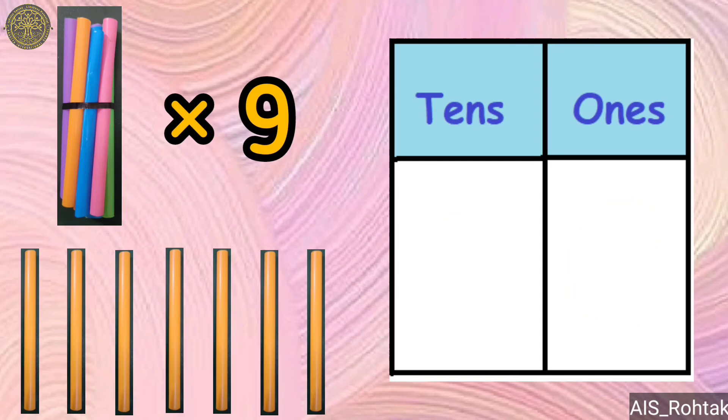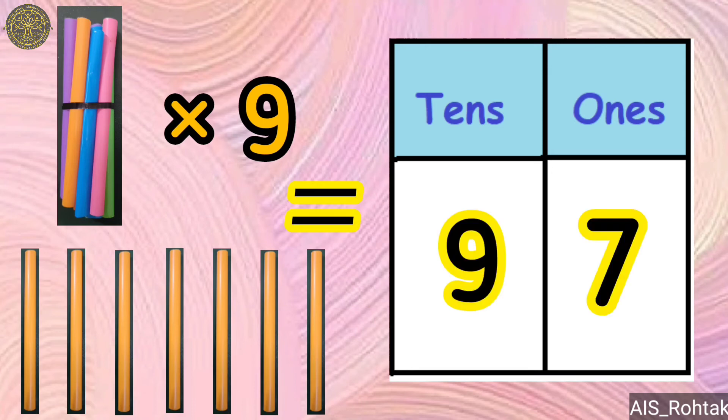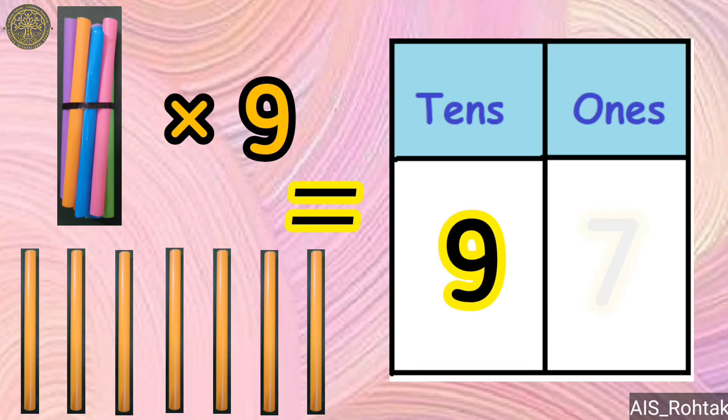Nine bundles and seven loose sticks make the number 97 — nine tens and seven ones.